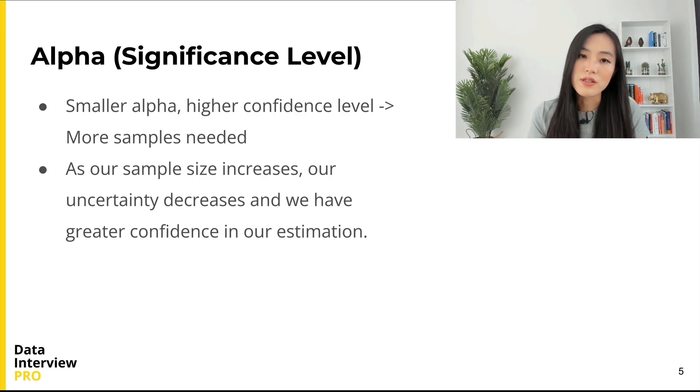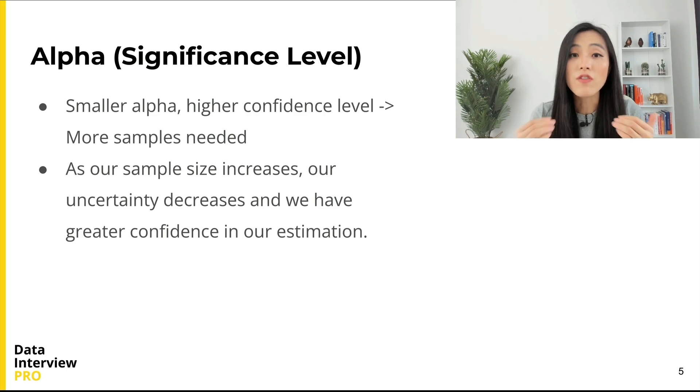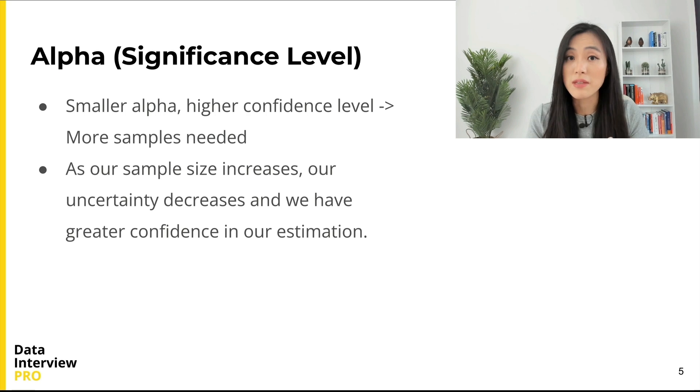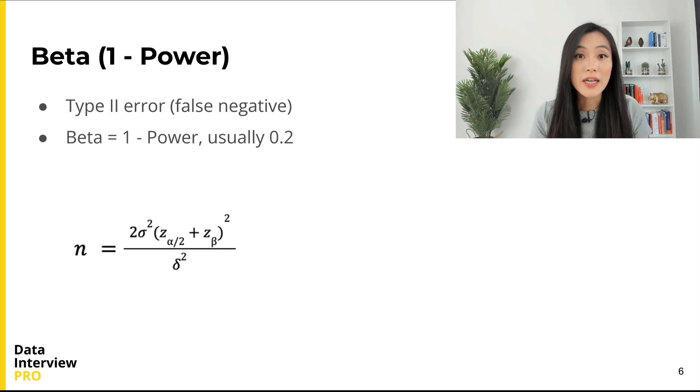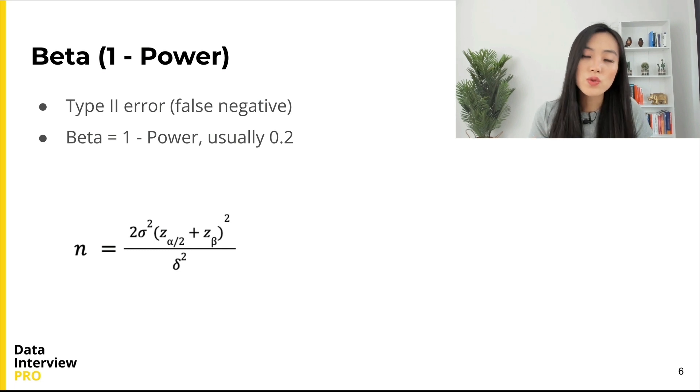So with decreasing α, we need more samples. Intuitively, this makes sense: if we want to decrease Type I error α, we increase our confidence level of the estimation, and we need more samples.